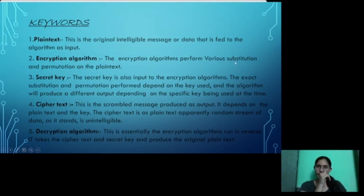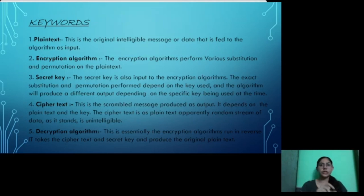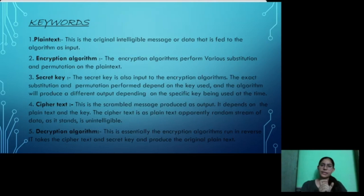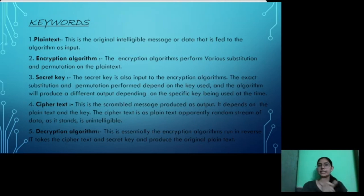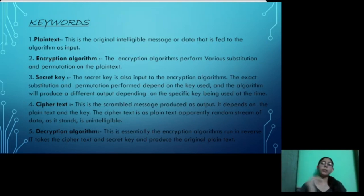When we perform the encryption algorithm using substitution, a plain text like A, B, C is replaced with other letters or symbols — for example, 1, 2, star sign. In permutation, the arrangement is changed: A, B, C gets rearranged to C, A, B. Both substitution and permutation are used in the encryption algorithm.